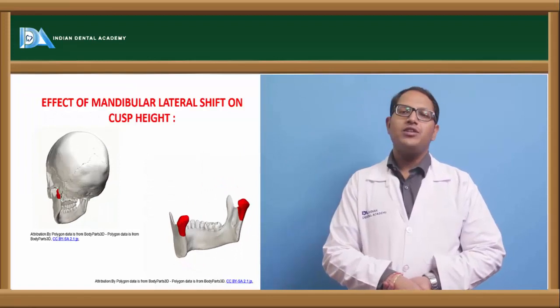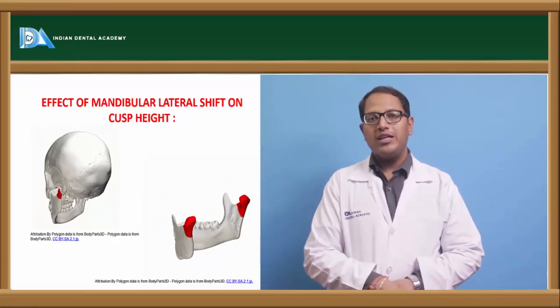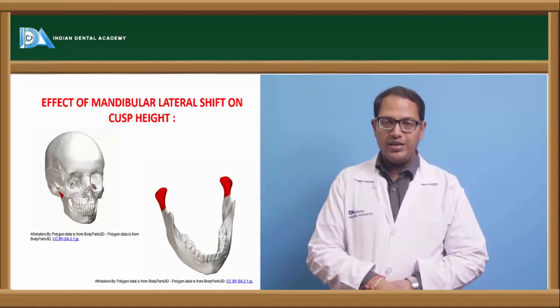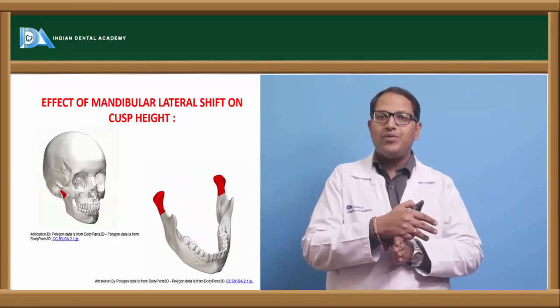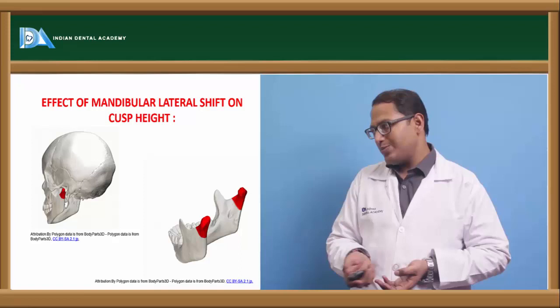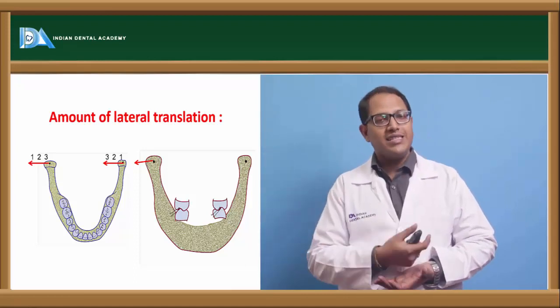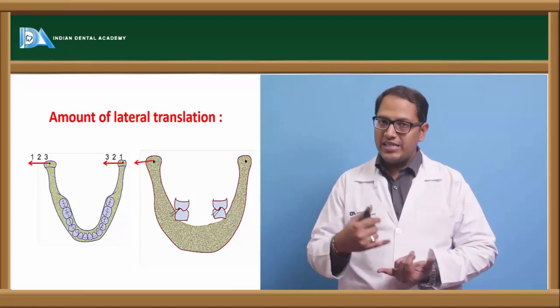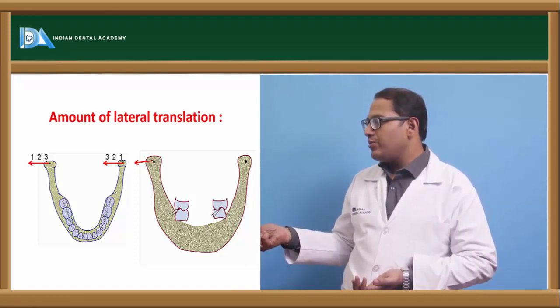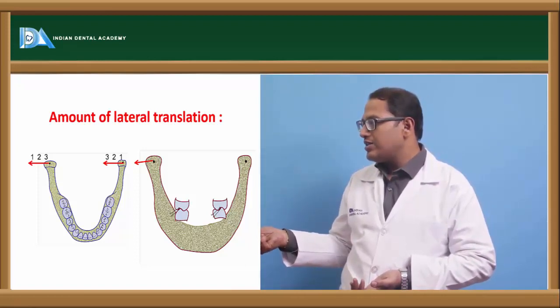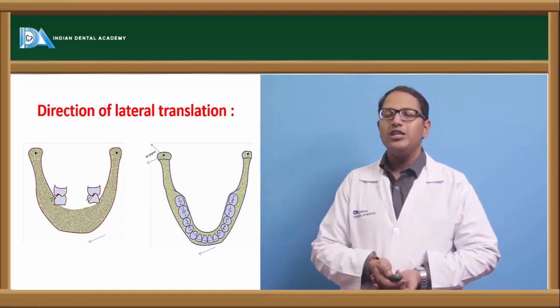Effect of mandibular lateral shift on the cuspal height. In the lateral shift, the Bennett shift which is happening, if the amount is more in Bennett shift, the cuspal height cannot be more because then it will not allow the balance or the working side, both the sides to do the eccentric movements. We have to keep the cuspal angulation low as possible. Amount of lateral translation: this can be of three types - progressive Bennett movement, lateral translation movement, or precurrent movement. One can go straight, one can go a little down straight like this, one can travel a little straight and then come down. These are the different types of Bennett movements that can happen based on the amount and the direction of lateral translation.